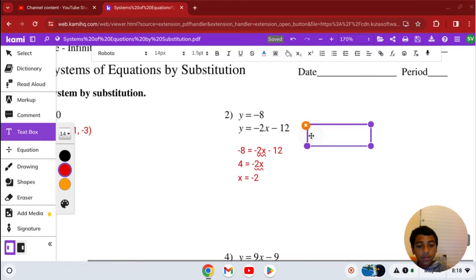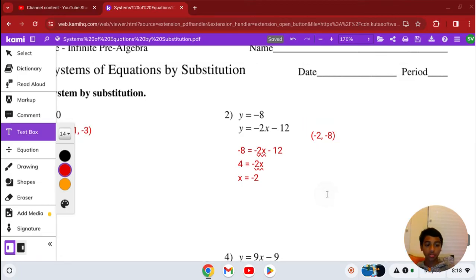So our solution is negative 2 comma negative 8. This point on the graph intersects both lines. That's the solution.